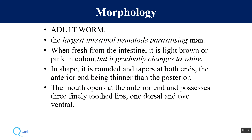Morphology of the adult worm: we must remember that it is the largest intestinal nematode parasitizing man. When fresh from the intestine it is usually light brown or pink in color, but gradually changes to white. In shape it is rounded and tapers at both ends.